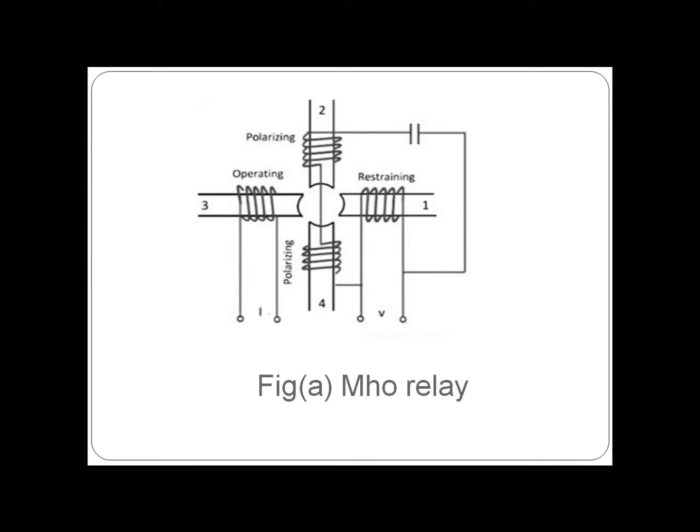The restraining torque produced is proportional to the square of the voltage, V², in Mho relay, while the operating torque is proportional to the product of voltage and current, VI.